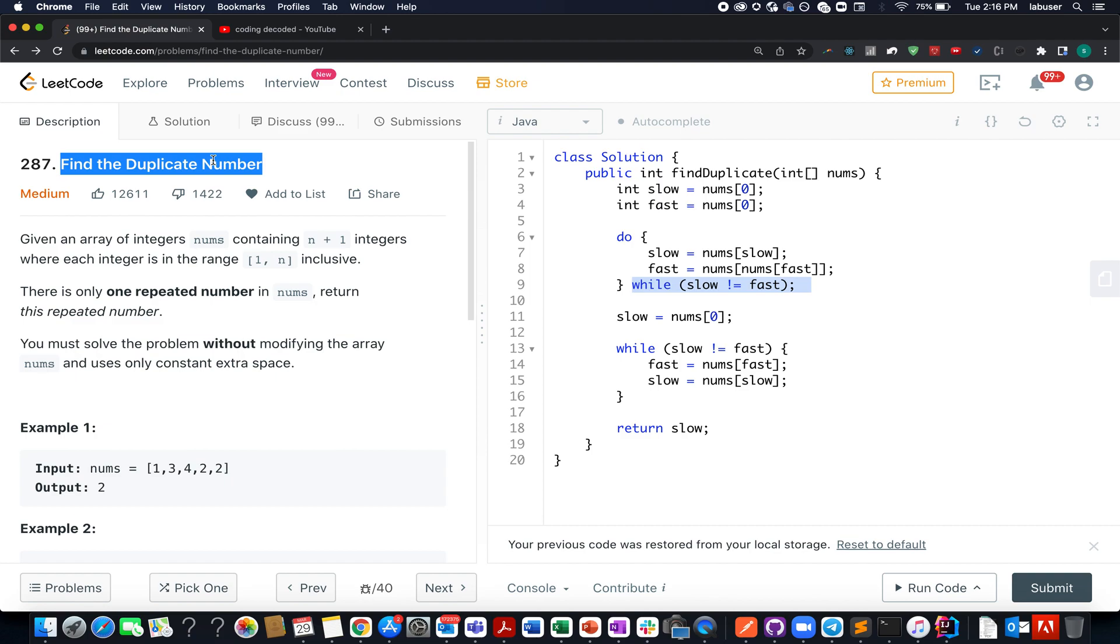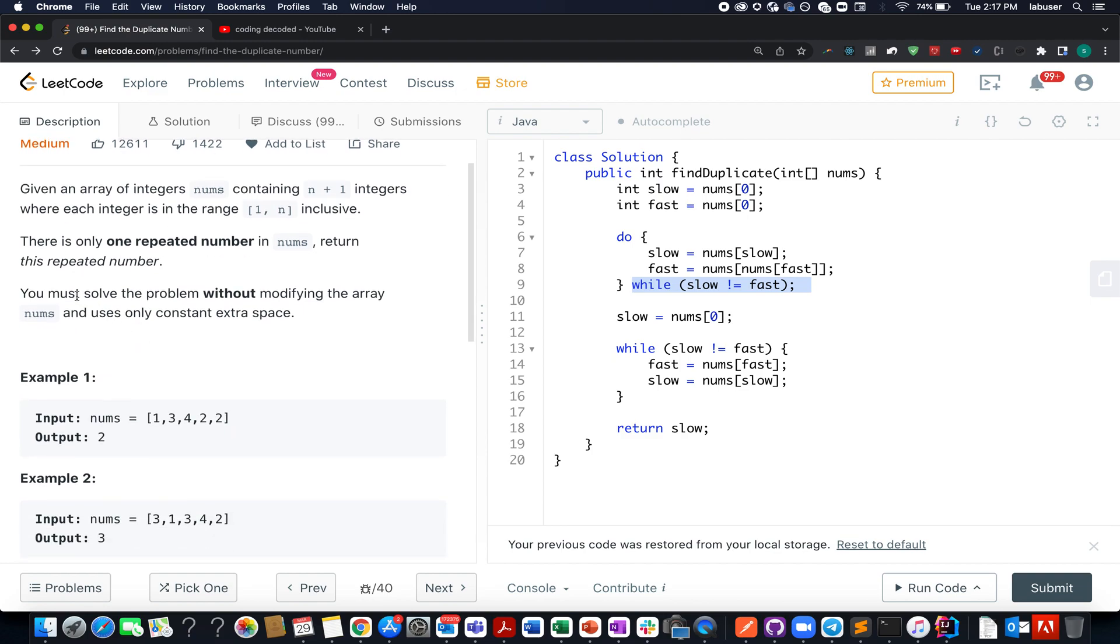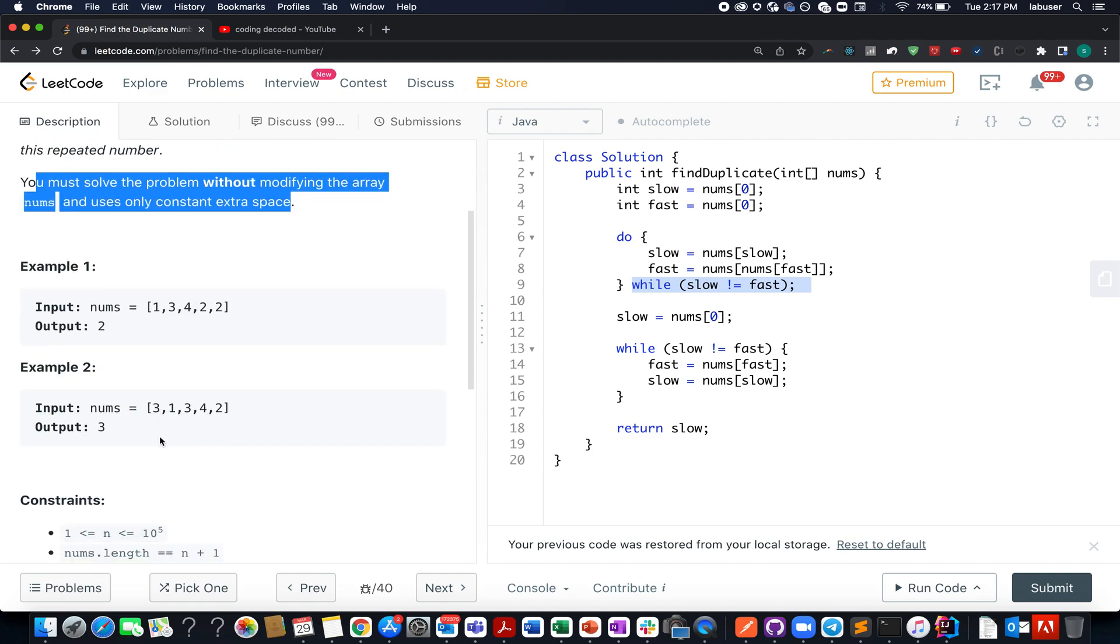Here in this question we are given an array of size n plus one. Also it is told that all the elements will be in the range of one up till n inclusive. That simply signifies that one number will be repeated twice in this input array. What we need to do is identify that duplicate number that is present in this array. Also the question states that you must solve the problem without modifying the nums array and you should only use constant space to come up with the algorithm. So these examples are pretty easy to understand. Here the duplicate element is 2 and this is what we need to return.